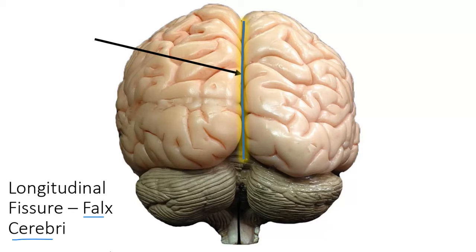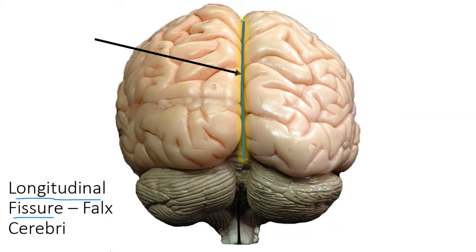We'll get into the falx cerebri when we talk about the meninges and the dural septa. The outer layer of the meninges is a connective tissue that surrounds your brain and spinal cord, and it forms partitions that separate certain parts of your brain from others. The falx cerebri separates the left and right cerebral hemispheres and sits in the longitudinal fissure. A fissure is a deep groove in the brain, and a sulcus is a shallow groove.